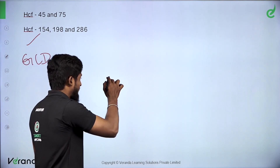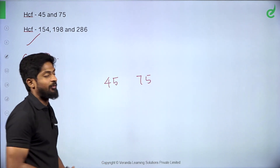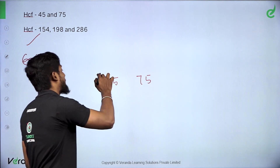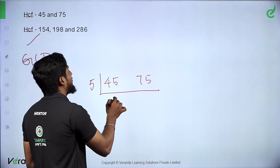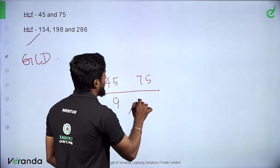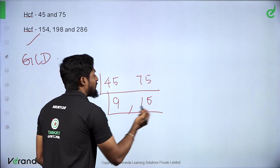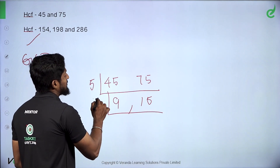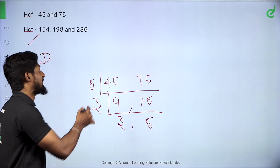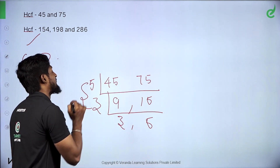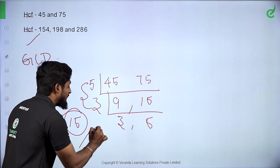Now let's take the numbers 45 and 75. Let's find the HCF. We will use a factorization table — dividing by 5, then 3.